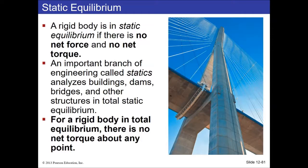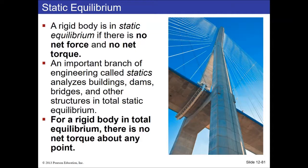If F_net is zero and tau_net (torque) is zero, then the object will not have any translational or rotational motion. This is a very important part of a field known as statics, which is one of the first classes you'll take as an engineering student. Understanding the structural stability of things is pretty important when it comes to building stuff.